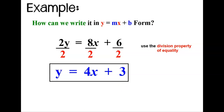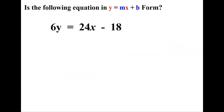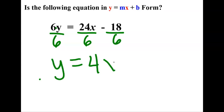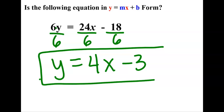Let's take a look at a few more examples. Alright, it appears as though my y is almost isolated here, but it still has a coefficient of timesing by 6. So I'm going to divide all three terms by 6, and that will leave me with 4x minus 3, and that's my slope-intercept equation.